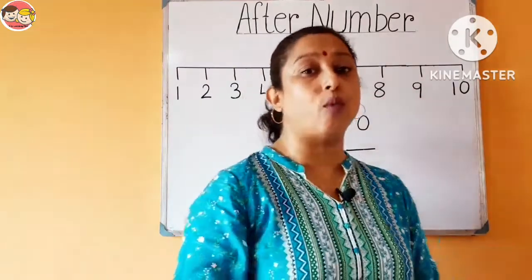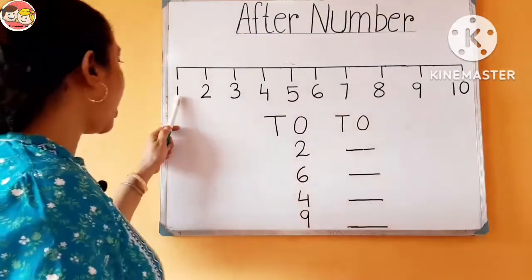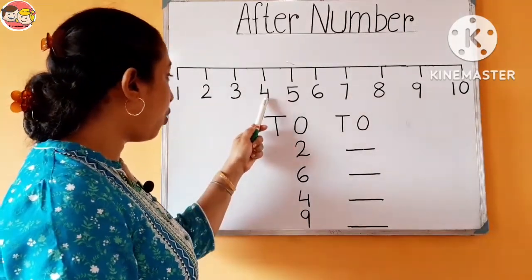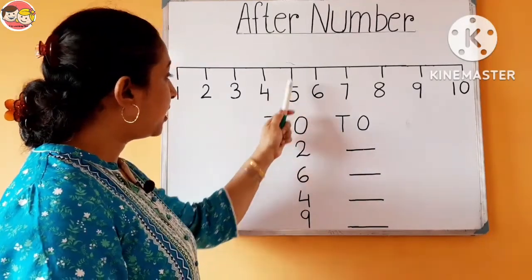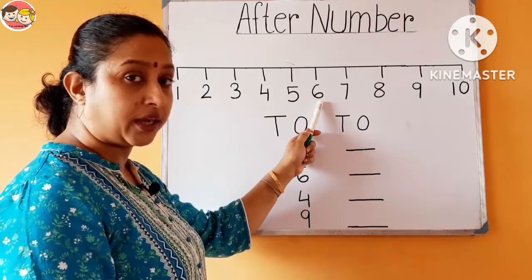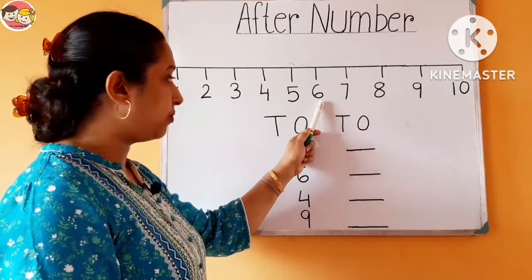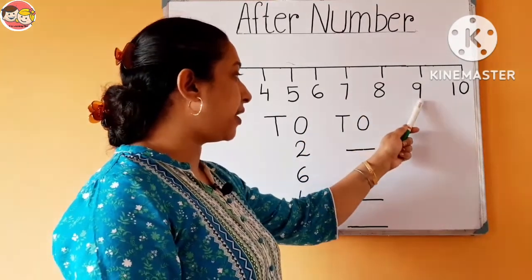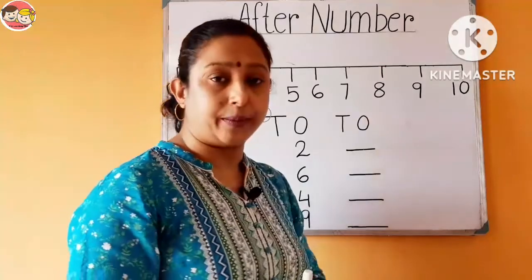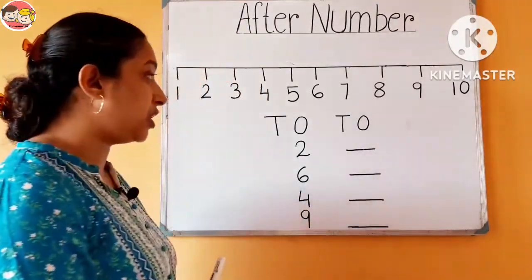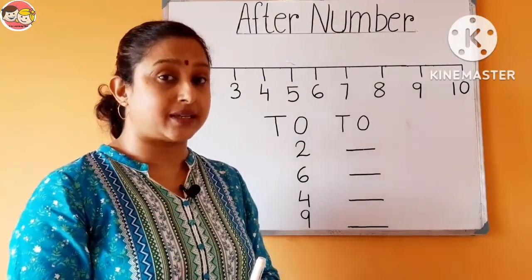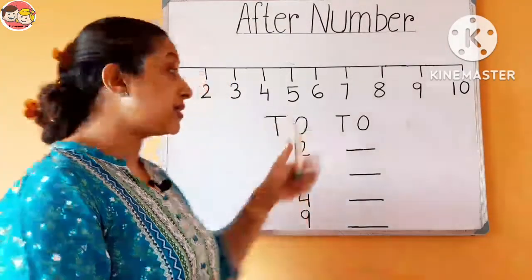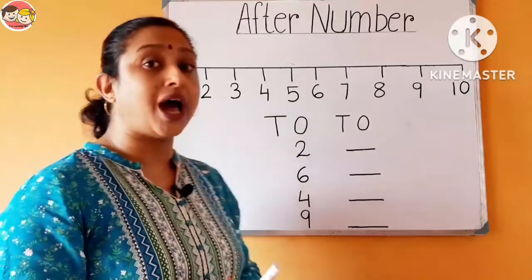1, 2, 3, 4, 5, 6 — children, observe very carefully, here we are moving forward — then 7, 8, 9, 10. So when we do forward counting, we get to know what comes next. That is called 'after.' After means baad mein.